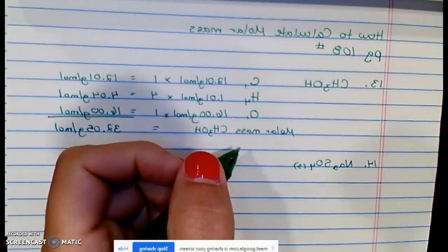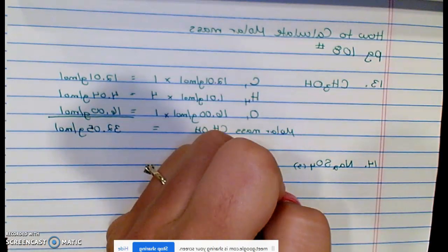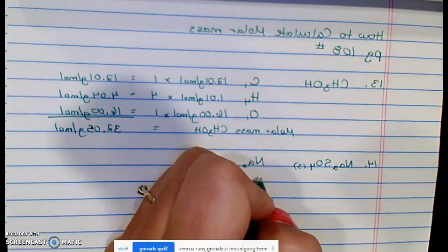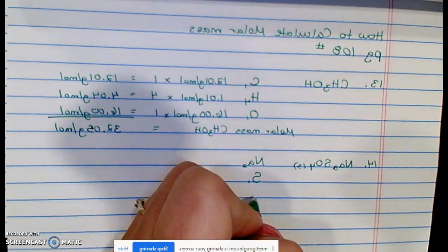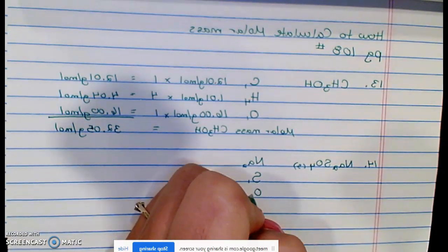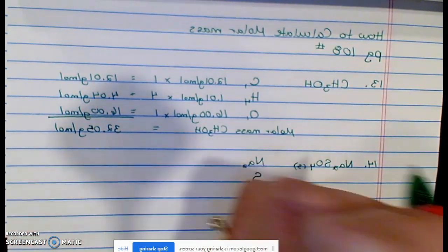Okay, sodium sulfate. So, let's take it apart. How many sodiums? I have two. How many sulfurs? One. How many oxygens? Four.